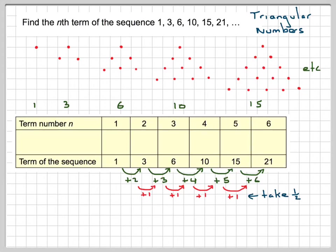So what you need to do, this is a quadratic sequence, so you take half of 1, which is a half, and look at a half n squared.